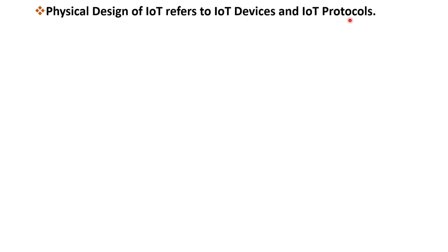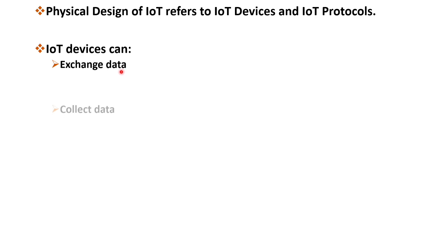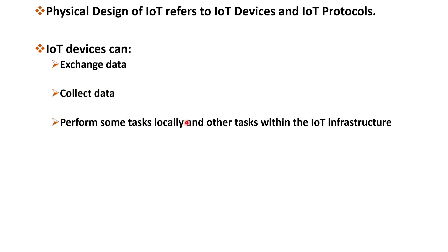Let us begin by exploring IoT devices first. These IoT devices play a crucial role in exchanging data with other connected devices and applications either directly or indirectly. They collect data from various sources and have the ability to process that data locally. Alternatively, they can also transmit the data to a centralized server or cloud-based applications for further processing.